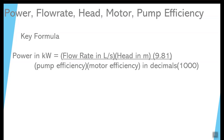Multiply those three numbers together on the top to get an answer. The bottom of the fraction is the pump efficiency in decimals — so 89% would be 0.89 — times the motor efficiency, so 80% would be 0.80. Multiply those together, then multiply by 1,000 to get the bottom number. Then divide the top answer by the bottom answer to get your final answer.